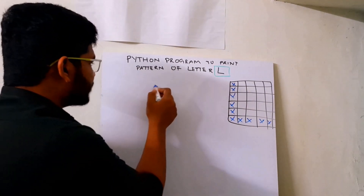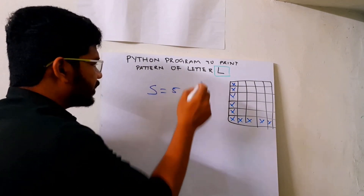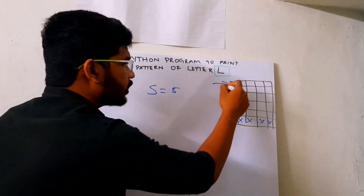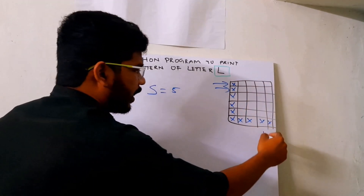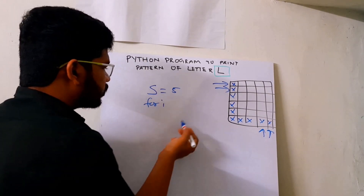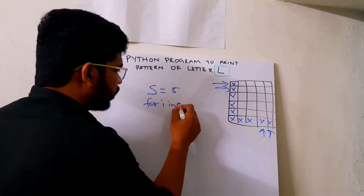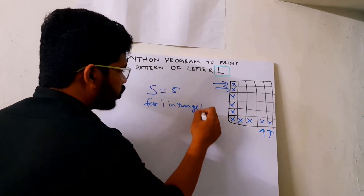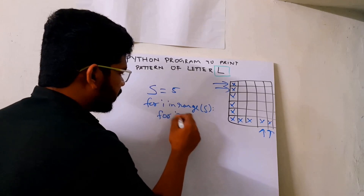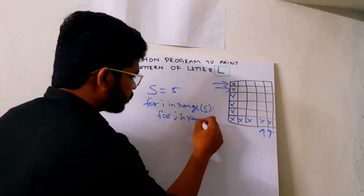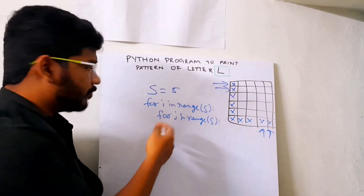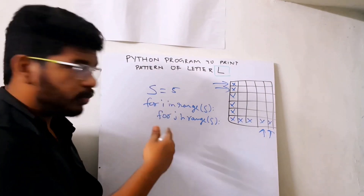Let us assume the size is 5 and write it as s. I'll write two for loops as usual — one is for row looping and one is for column looping. So I write: for i in range of s for the rows, and for j in range of s for the columns.